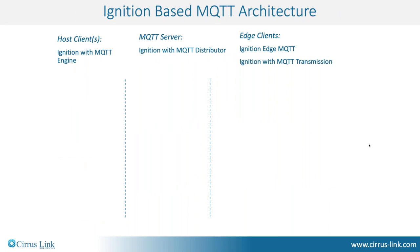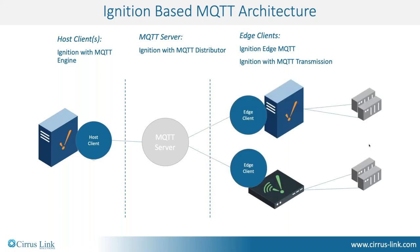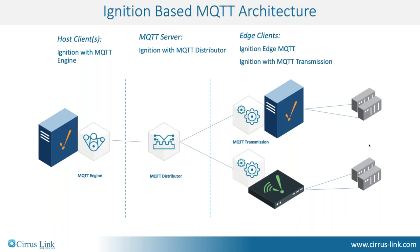Looking at the architecture, we start with the MQTT server where different host clients or edge clients connect. On the left side you have a host client — the hub or central connection point of your MQTT application. On the right you have the different edge clients. The Transmission module can be plugged into Ignition sitting in front of a factory floor with hundreds of thousands of tags. Ignition Edge MQTT is used for remote applications — oil and gas, wastewater, anything with remote capabilities. These all connect into the MQTT Distributor module, to which your central hub application on Ignition connects with MQTT Engine.